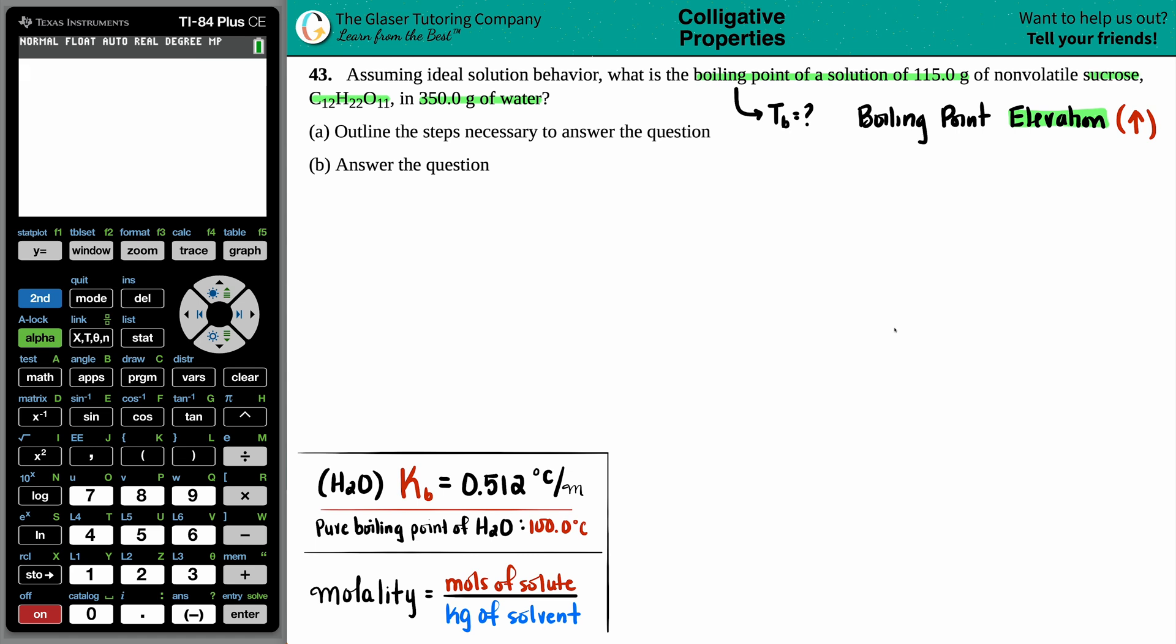We know already the answer is that the boiling point has to be higher than 100. So on a multiple choice, if they give you boiling points lower than 100, you cancel them out. But now we actually have to find the boiling point, so this is where the math gets involved.